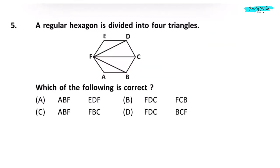Question 5. A regular hexagon is divided into 4 triangles. Which of the following is correct? Correct answer is option A. When considering congruent triangles, the order is very important.